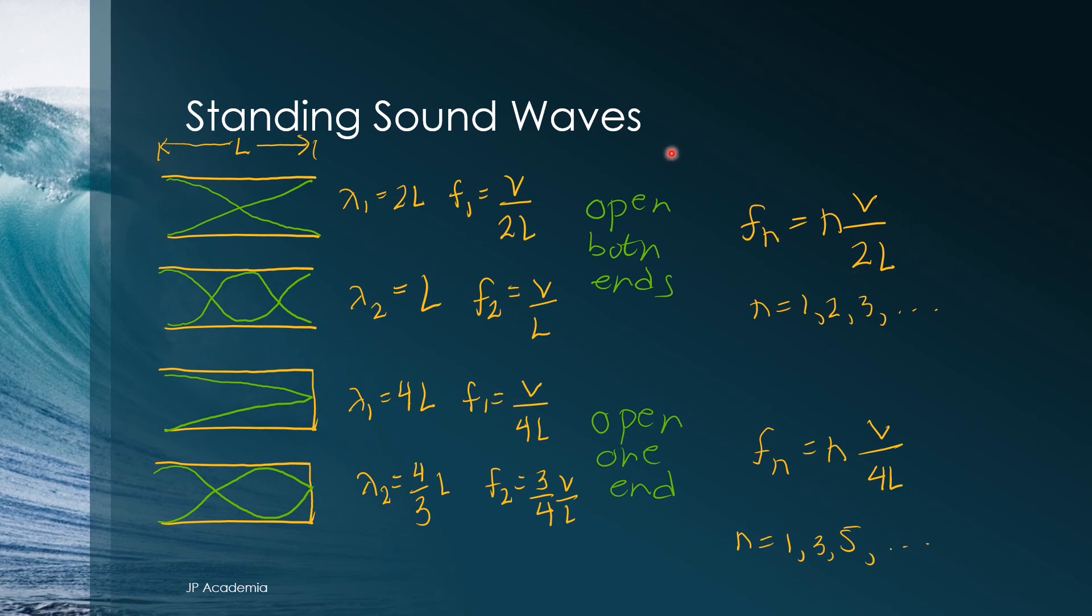For a pipe open at both ends, the resonant frequencies are expressed as similar for a string fixed at both ends. So we have Fn is equal to N times V over 2L. While in a pipe close at one end only, only odd harmonics can be generated and expressed with this one. So F sub n is equal to N times V over 4L.